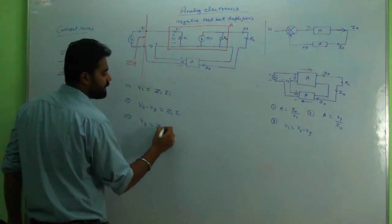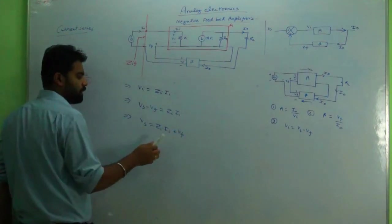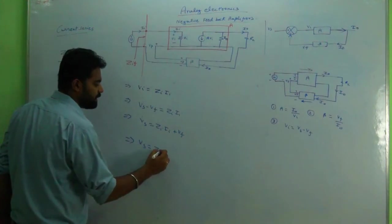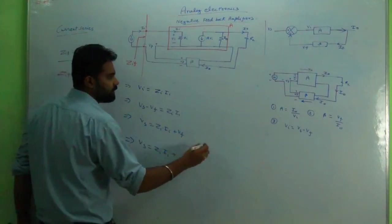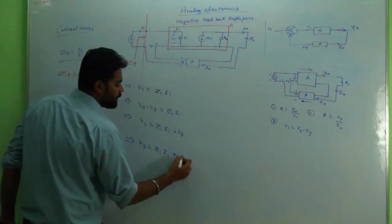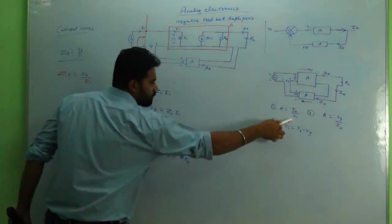So vs equals zi into ii plus vf. Now vf can be substituted, so zi into ii plus vf, vf is beta into i0.